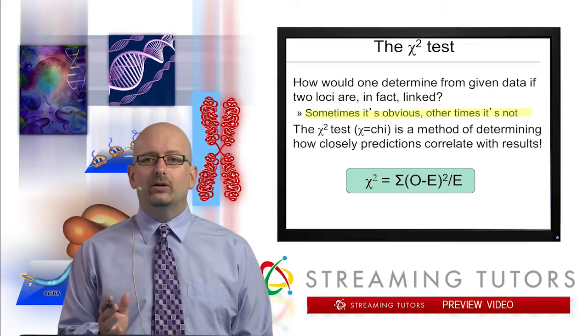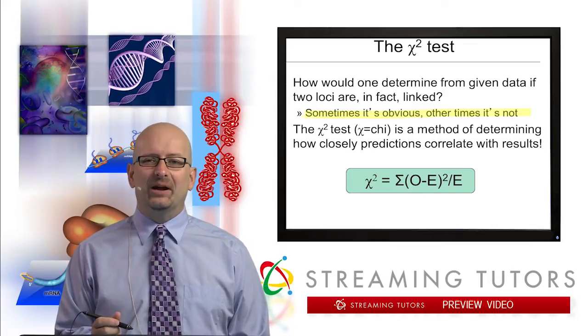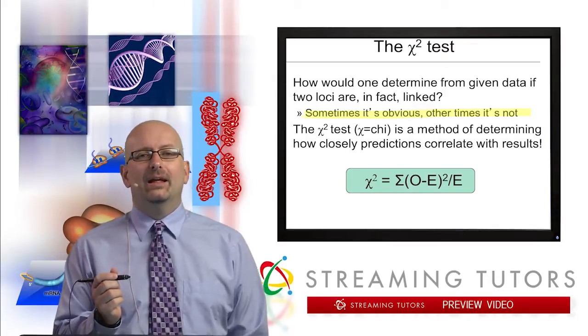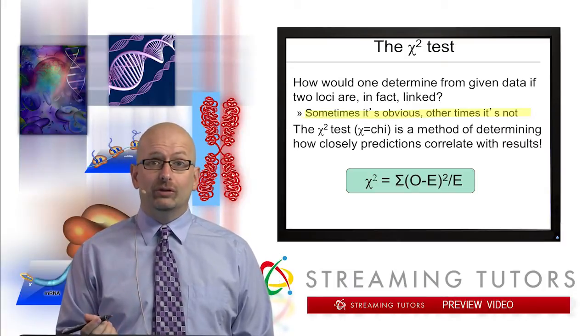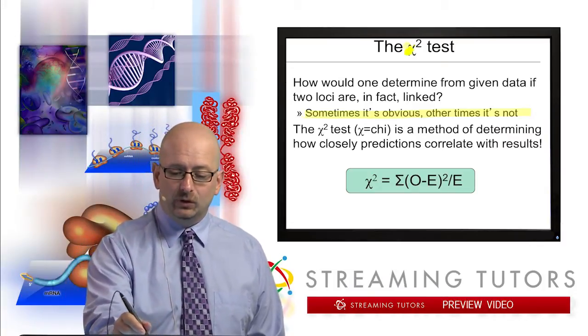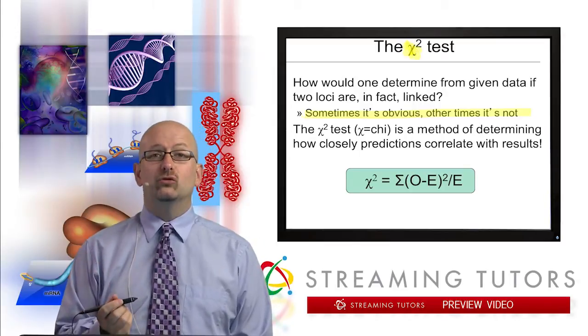Well, the chi-square test, and we should get one thing out of the way right away, the Greek letter chi superficially resembles an x. So here's what it looks like if it's drawn out.